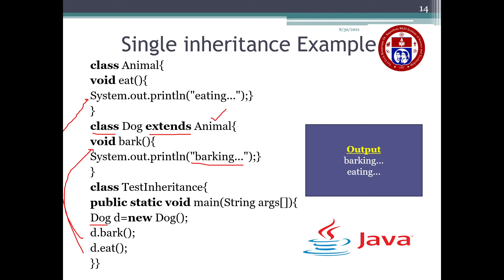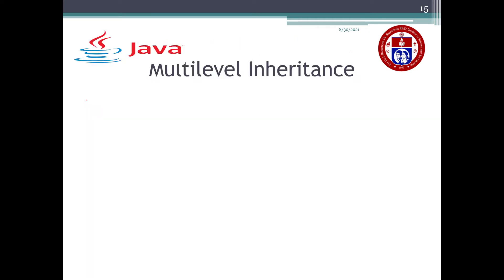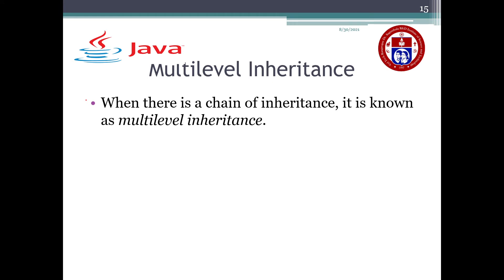Now, what is meant by multi-level inheritance? When there is a chain of inheritance, it is known as multi-level inheritance. The difference between single and multi-level inheritance is that in single inheritance you have only one base class and one derived class, but in multi-level inheritance you will have more than one base class and more than one derived class.